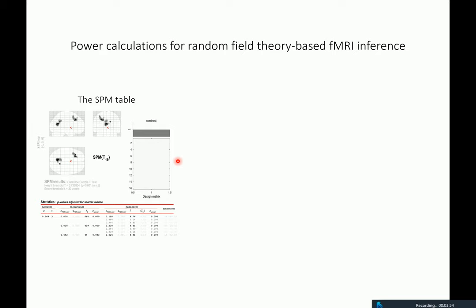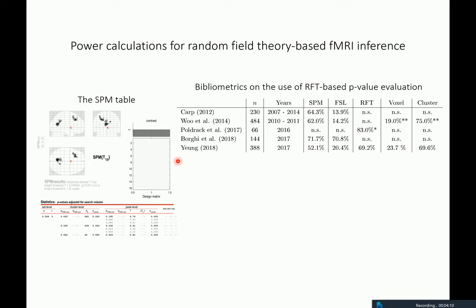What are we talking about, really? The inferences we do are based on the SPM table, which is the typical outcome of a GLM-based univariate fMRI data analysis. If you look into the literature and do bibliometric analysis, these kinds of classical inferences using SPM or FSL — which also implements field theory-based testing — remain fairly popular. SPM accounts for around 70% of the published literature, most of them using random field theory for inference, with cluster-level inference being particularly prominent.